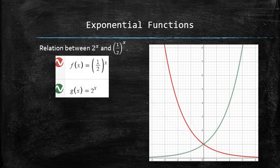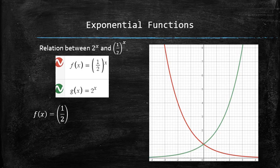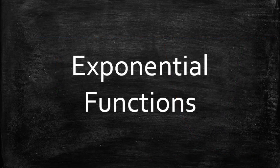It is hard not to notice the relation between the graphs of the exponential functions with bases 2 and 1 half. Using the properties of exponents, we can show that one is just a reflection of the other through the y-axis. We discussed exponential functions, their graphs, and their properties.